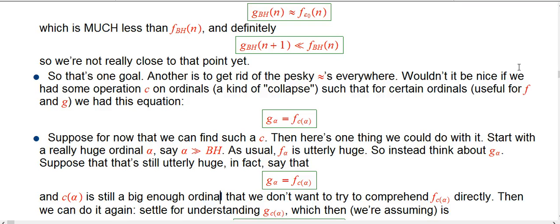So suppose we have the situation that g_α, like I've been proposing, is exactly equal to f at some collapsed ordinal. So again, you can think of BH and ε₀ as a good example of where, what this is going to look like. And so, and then c(α) is still a big enough ordinal. We're really not that excited about trying to comprehend that directly. Okay, so we do it again.